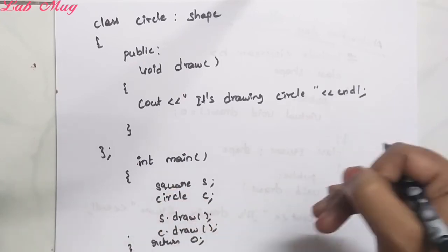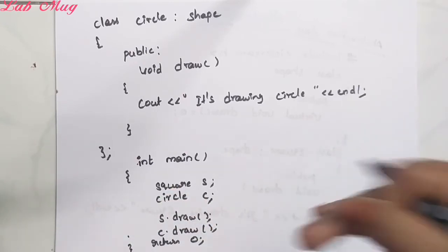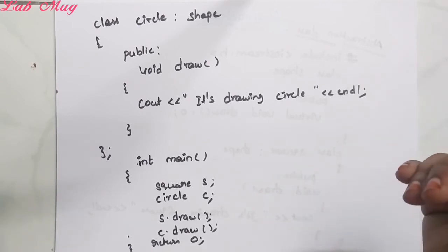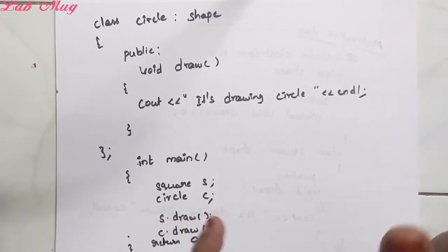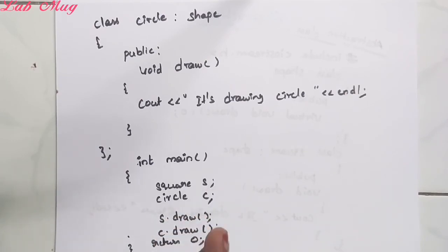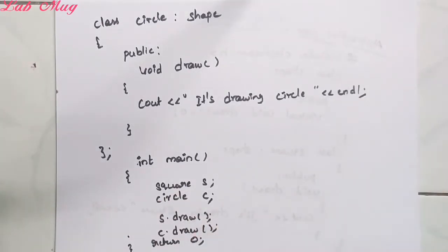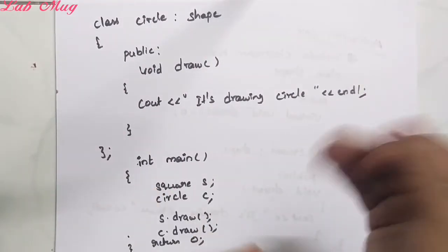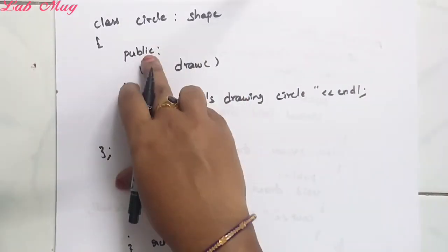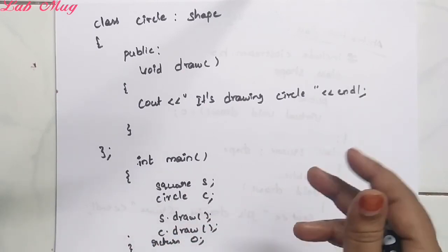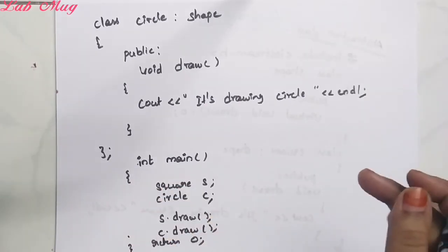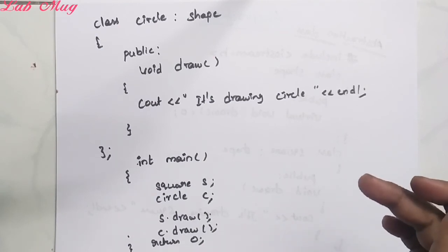Every method ki sambandhimchina function oka main definition untundhi. Base class aina Shape - a content ni manam inherit chestunam. Inheritance chestunam - one class ni another class ki inherit chestham. So akkada base class lo unna all members aa derived class ki inherit avuthayi. Manam data ni secure chestunam - access base fair ga define chestunam, data ni private ga or protected ga declare chestunam. So this provides security to our data.